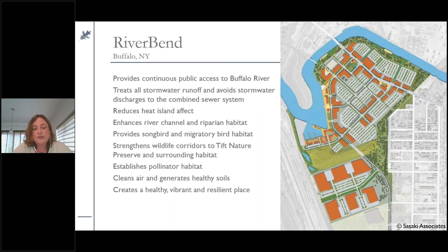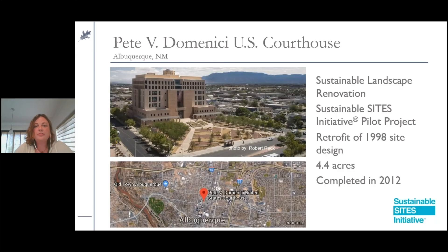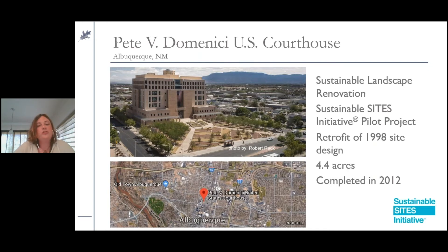Overall, what we really appreciated was that ecology and stormwater considerations set the framework early on for the master planning process. Through the master plan, residents and users would have continuous public access to the Buffalo River, all stormwater runoff would be treated on site avoiding discharges to the combined system, heat island effects reduced, riparian corridor quality enhanced, habitat provided, and connections made to the adjacent Tips to Nature Preserve — creating a healthy, vibrant, resilient place.